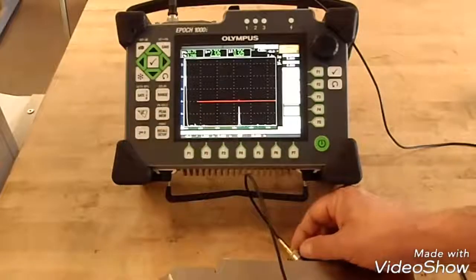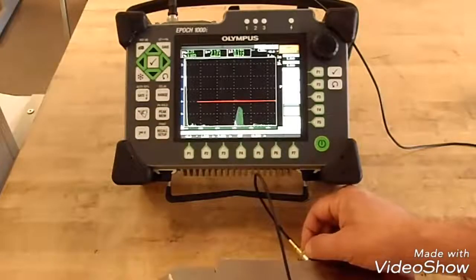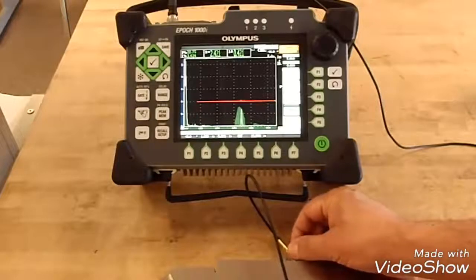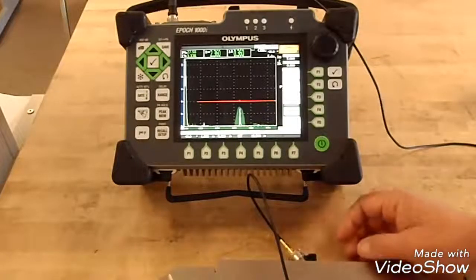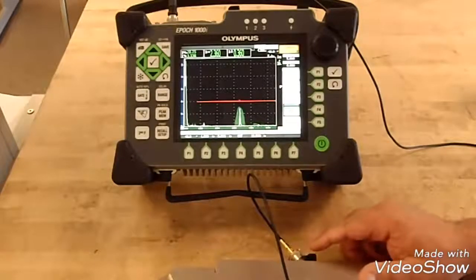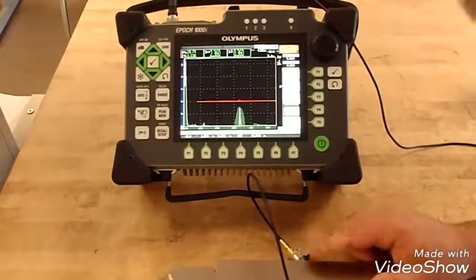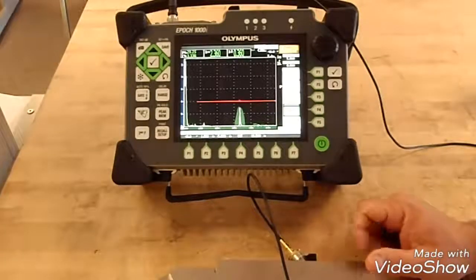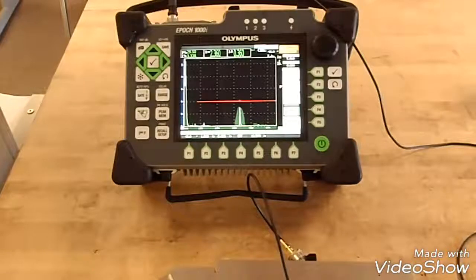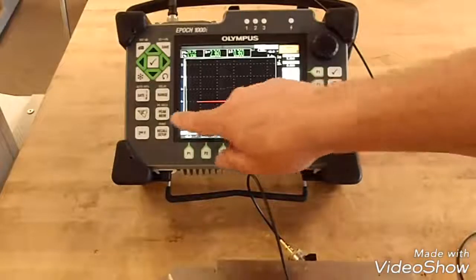In the direction of the large hole, peak your signal. Once your signal is peaked, look where the marking on your wedge lines up with the block. In this case it lines up at 45 degrees exactly, so now we're ready to calibrate.